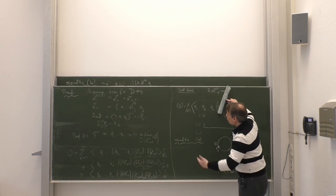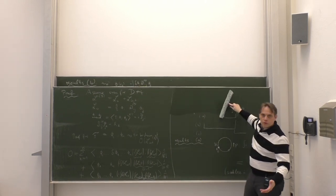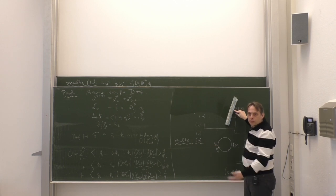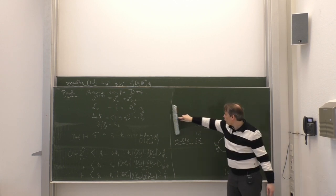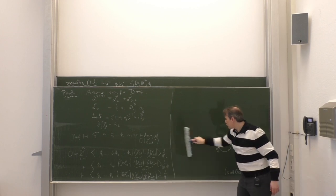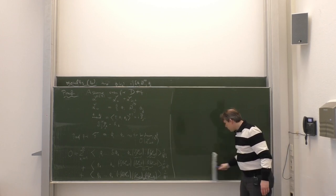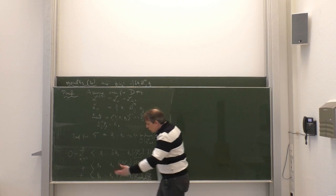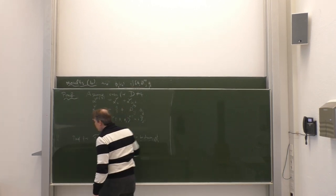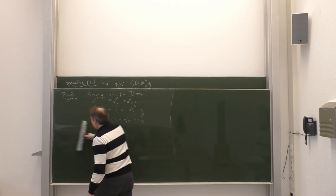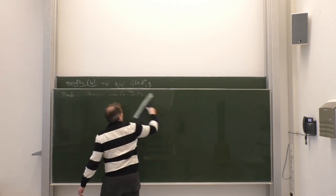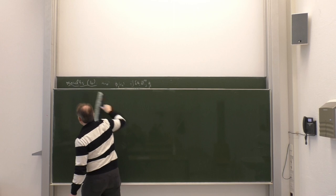The important outcome we already stressed: this means we have proven, for example, that the photon self-energy in QED in dimensional regularization is transverse at all orders. Also the Dyson-Schwinger equations in d dimensions are valid at all orders, and similar identities can be proven for other theories.